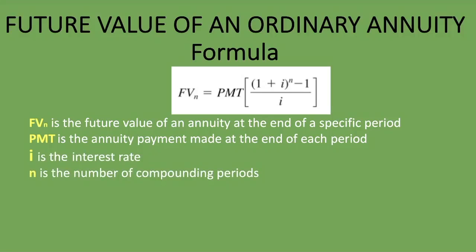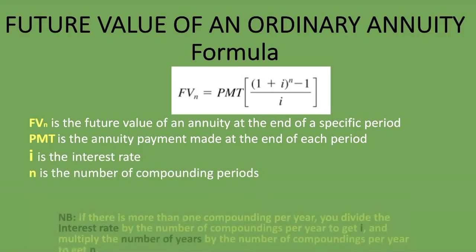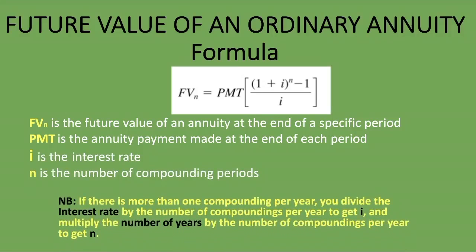Now remember: if there's more than one compounding per year — compounded semi-annually, quarterly, monthly, or even daily — you divide the interest rate by the number of compoundings per year to get i, and you multiply the number of years by the number of compoundings per year to get N. I hope you have already looked at that lesson or already know the basics. So let's get into examples and see how we apply all this theory.